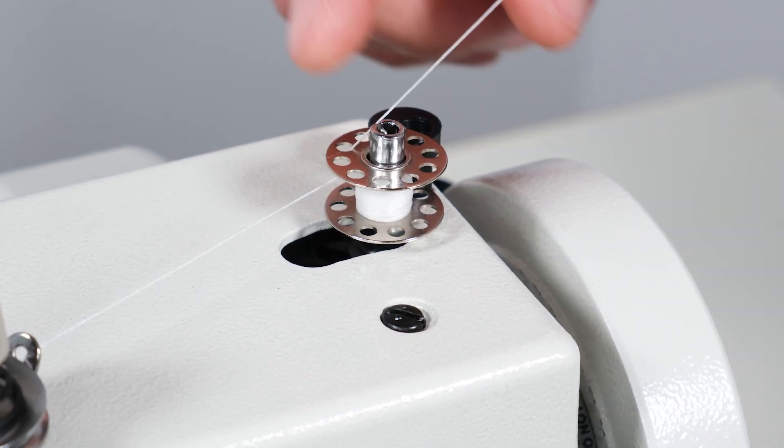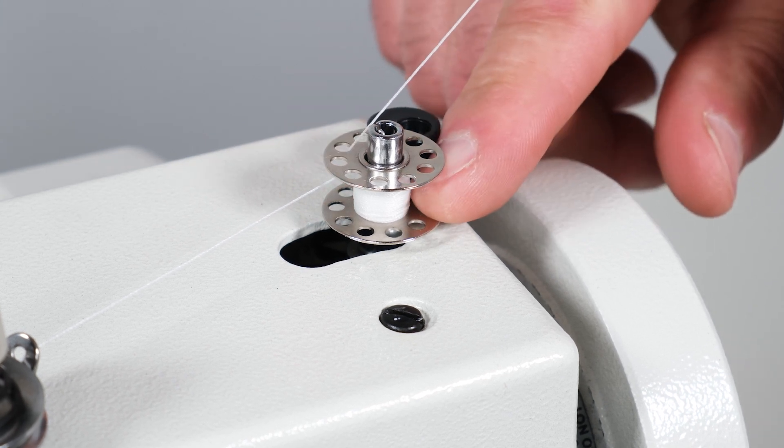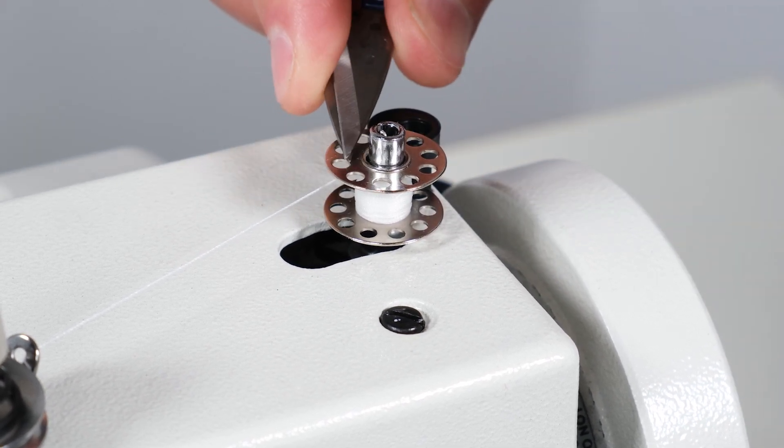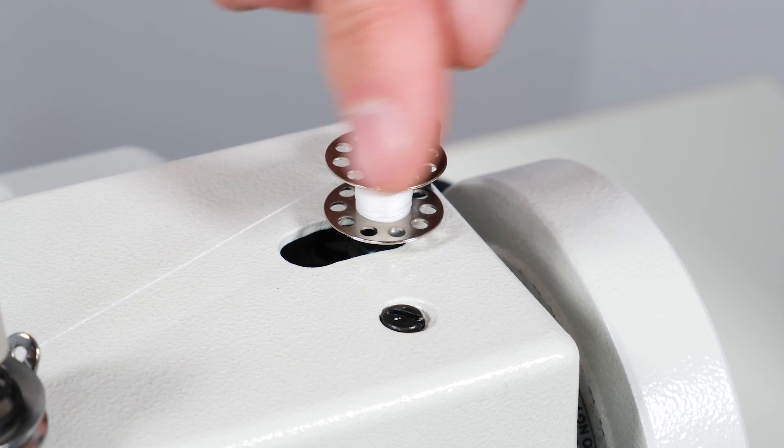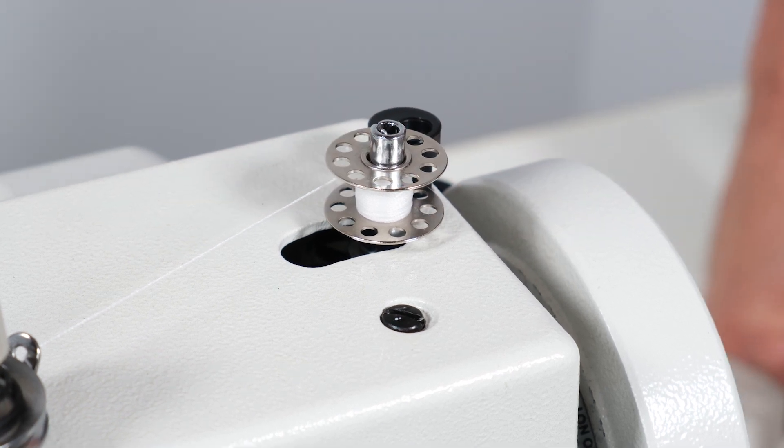When you have enough thread on the bobbin to secure the bobbin thread, snip it on the top so there's no thread hanging over, continue to sew and your bobbin will wind.